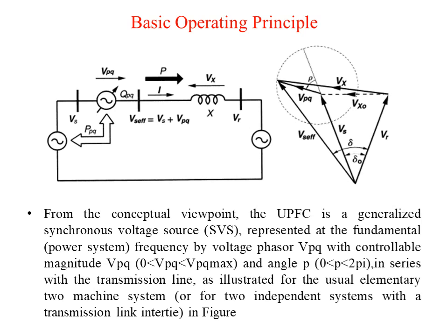The UPFC is connected in series with the transmission line as illustrated for an elementary two-machine system, or for two independent systems with a transmission line inter-tie as shown in the figure. The voltage Vpq is controllable from 0 to its maximum value Vpq_max. As seen earlier, the term 'unified' means it controls voltage, impedance, and phase angle simultaneously, so when we control the voltage the phase angle also changes.